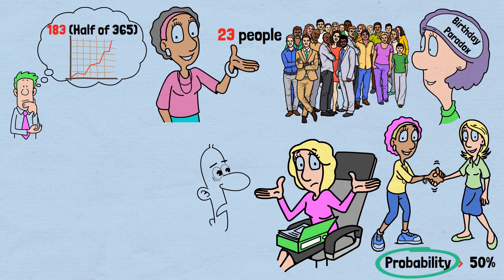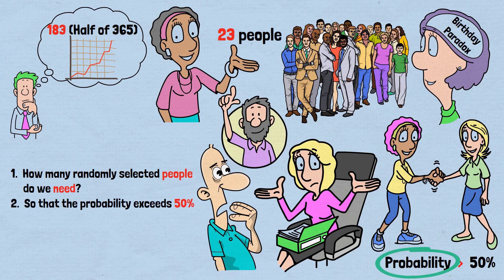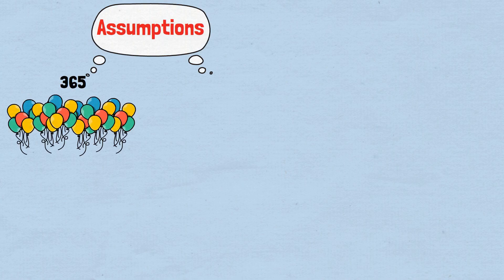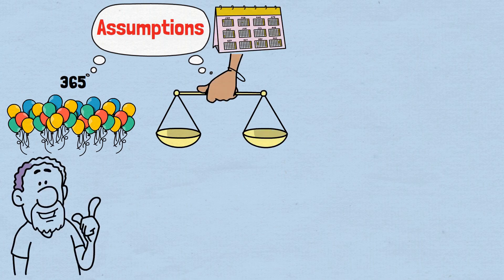Before diving into why this result is so surprising, let's be clear about what we're asking. How many randomly selected people do we need, so that the probability exceeds 50%, that at least two people share the exact same birthday day and month. For simplicity, we're making two reasonable assumptions. There are 365 possible birthdays, ignoring leap years, and birthdays are distributed evenly throughout the year.